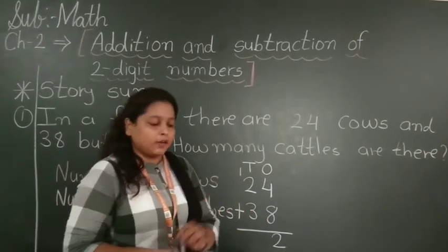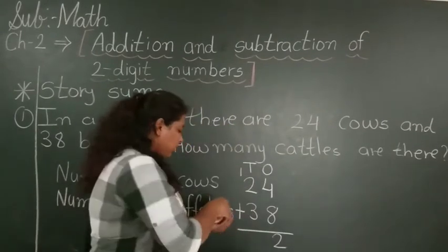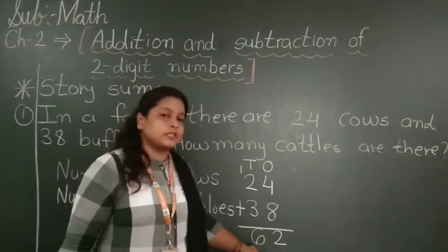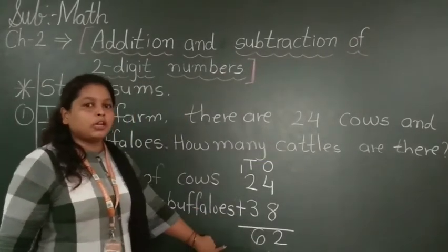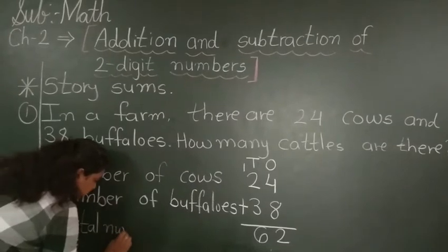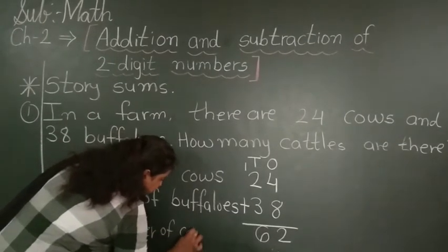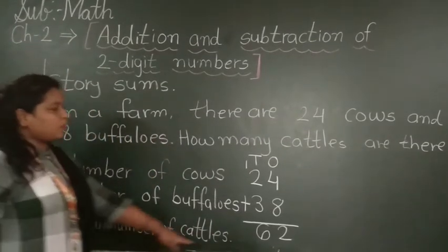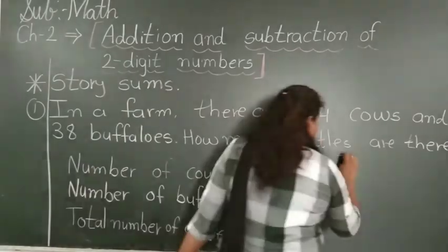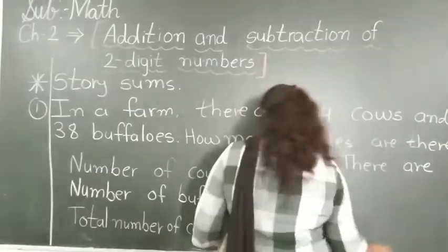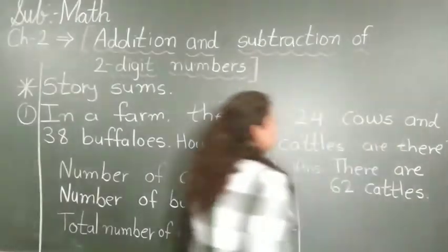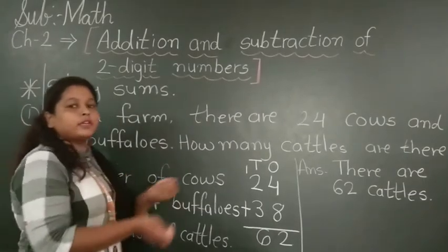Answer: 1 plus 2 is 3. And now 3 plus 3 — counting: 4, 5, 6. So you write 6 here. So 24 plus 38 equals 62. Total number of cattle — there are 62 cattle. So here we completed our first example about the story sum: Addition with Regrouping. I hope you have completed the first example in your notebook also.